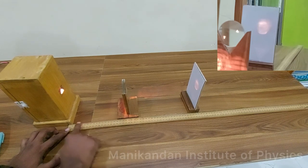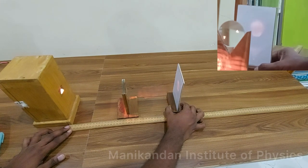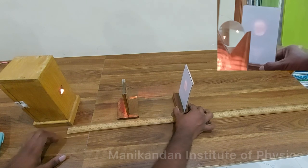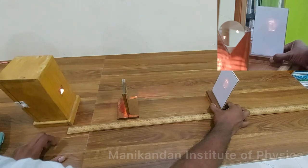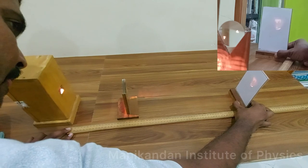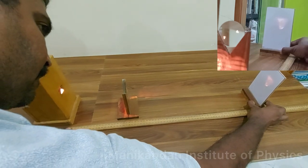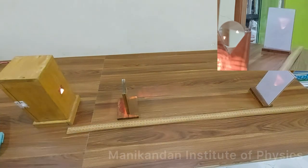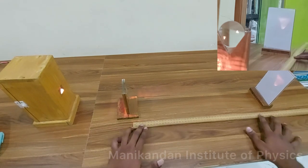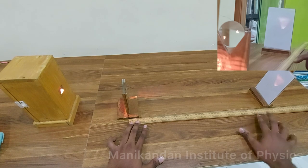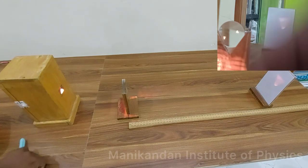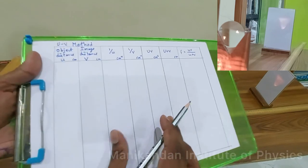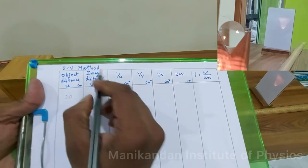With u = 20 centimeters, I move the screen slowly away from the lens until a clear image forms. Measuring the distance from the middle of the lens to the front face of the screen gives 52 centimeters. So when the object distance is 20 centimeters, the image distance v = 52 centimeters.